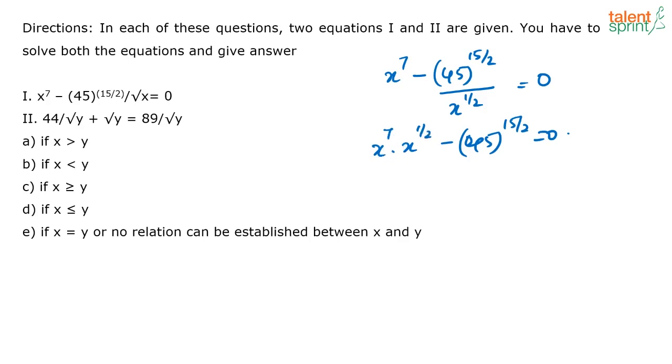So you have 7 plus 1 by 2. So you will have x to the power 7 plus 1 by 2, that is 15 by 2. This is equal to 45 to the power 15 by 2, or I can say x is equal to 45. So I get x is equal to 45.